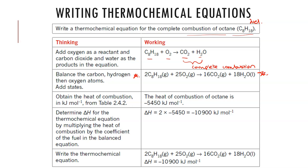If you're not comfortable balancing chemical equations yet, please come and see me for practice or go back to the original balancing chemical equations video from earlier. Once we have a balanced chemical equation, we look up the heat of combustion in your data booklet. There is a table listing the enthalpy of combustion for many fuels. Looking this up, we find the value of negative 5,450 kilojoules per mole, indicating it is an exothermic reaction.